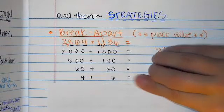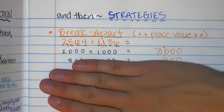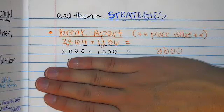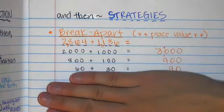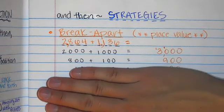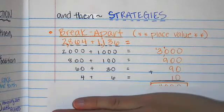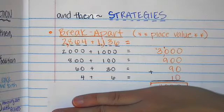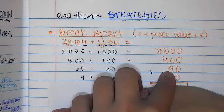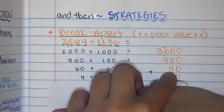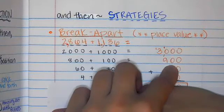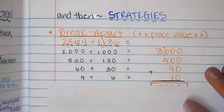Then what you do is you add each place value together. 2,000 plus 1,000 is 3,000. 800 plus 100 is 900. 60 plus 30 is 90 and 4 plus 6 is 10. Once you get these expanded forms of these different sums you take these partial sums and you add them together.